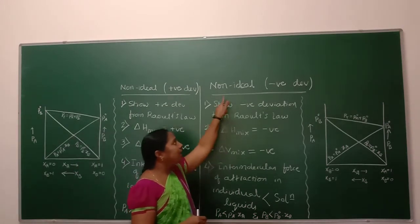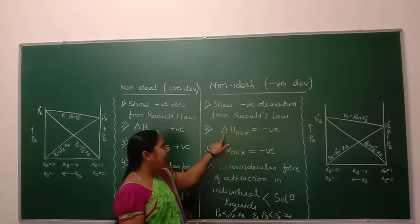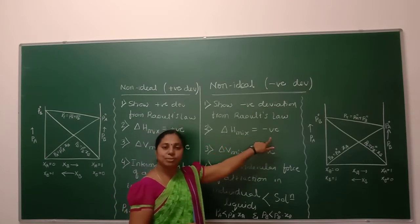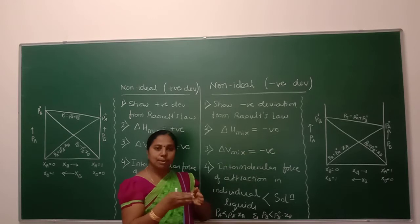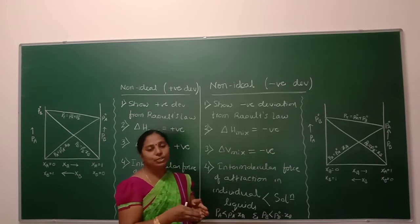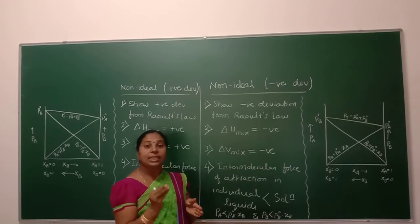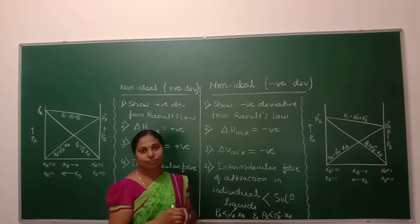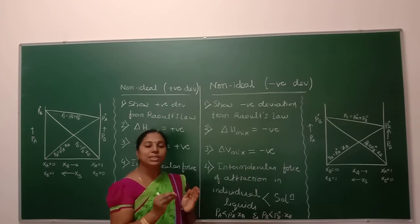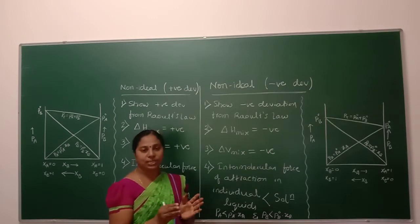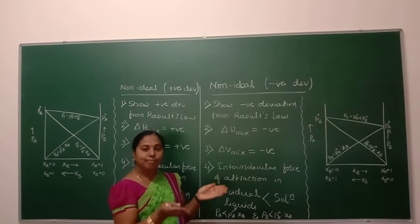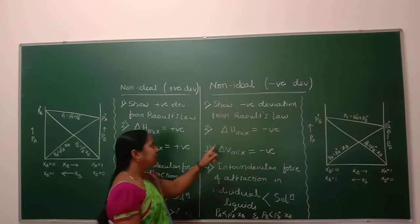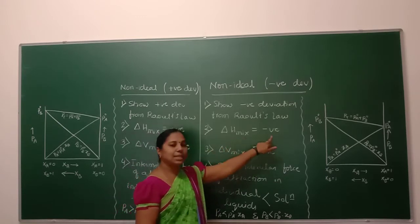In case of non-ideal with negative deviation, delta H of mixing is negative. During the mixing of the two liquids to form a solution, the heat is lost by the system. The system will lose some amount of heat due to the mixing of the two liquids to form a solution. Hence, delta H of mixing is negative.